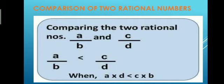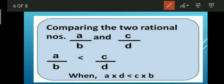Now let's look at comparison of two rational numbers — finding which is greater and which is smaller. There are two methods. The first method is by cross multiplication. Given two rational numbers a over b and c over d, we multiply a by d and c by b, then compare the two products.